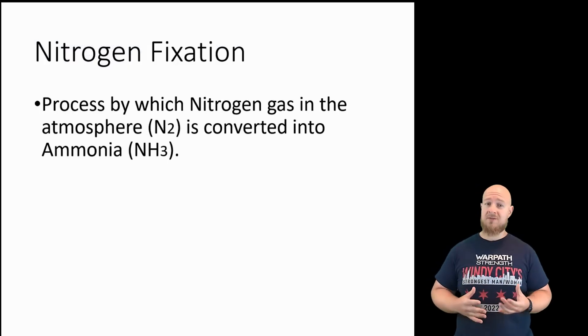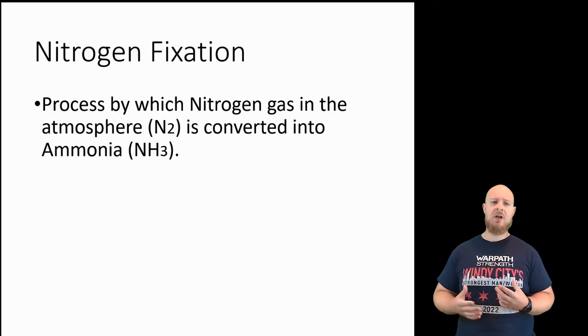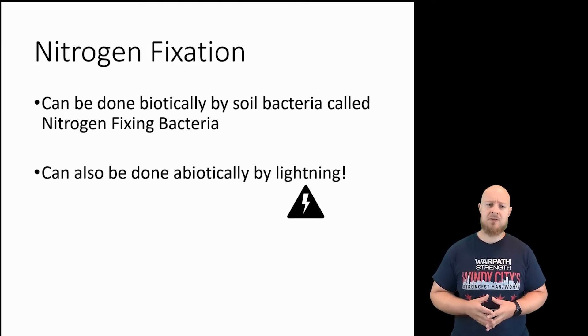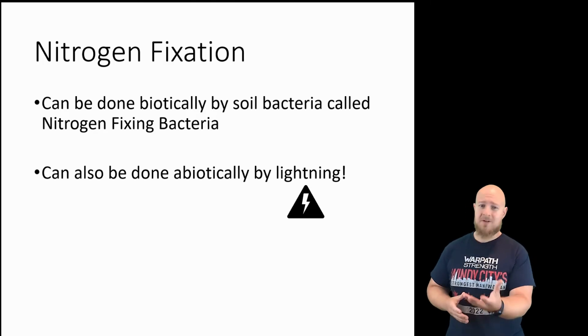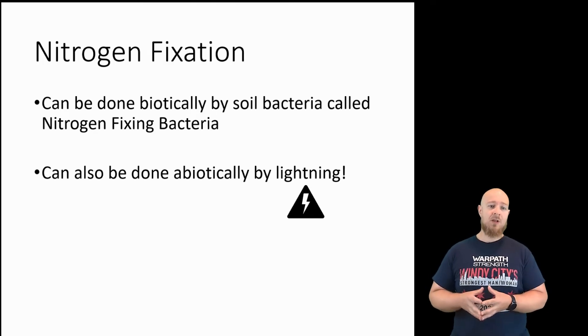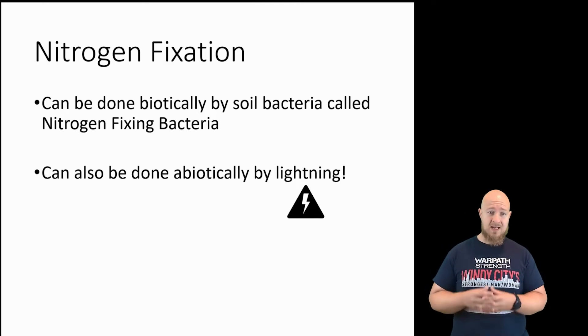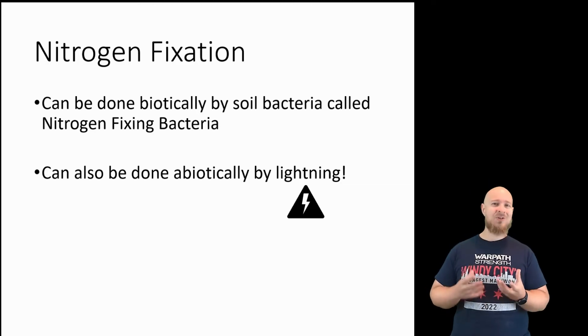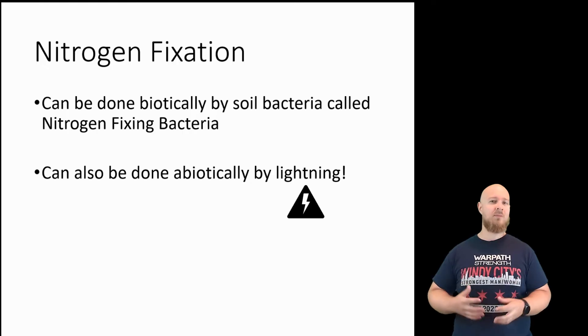Nitrogen fixation is the process of taking nitrogen gas in the atmosphere and converting it into ammonia, and this can be done in two ways. The most common way is that bacteria facilitate the process. We call it nitrogen fixing bacteria, and they take nitrogen gas from the atmosphere and convert it to ammonia and end up releasing that into the soil. This process can also happen through lightning. Lightning can also fix nitrogen into ammonia.